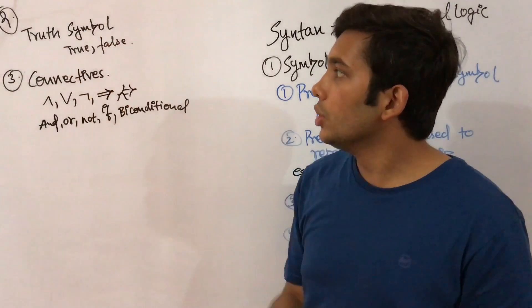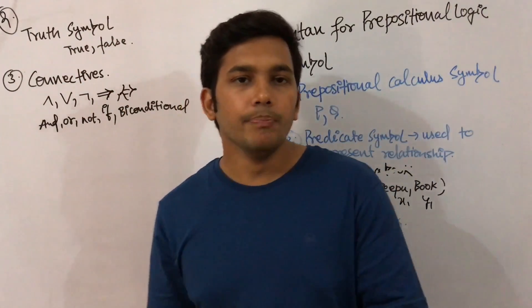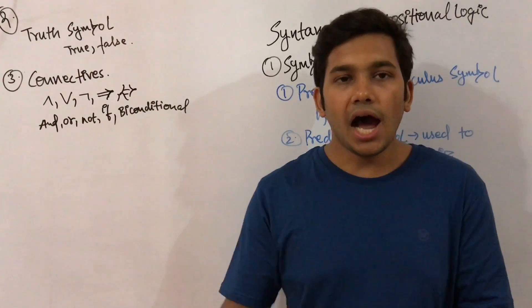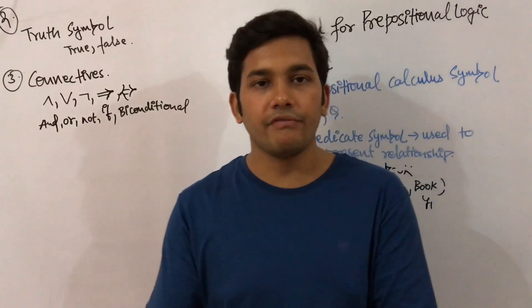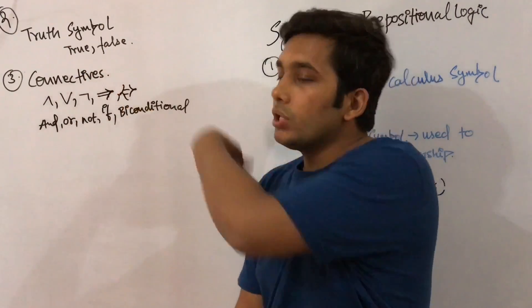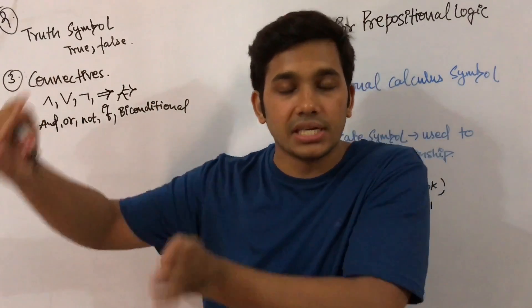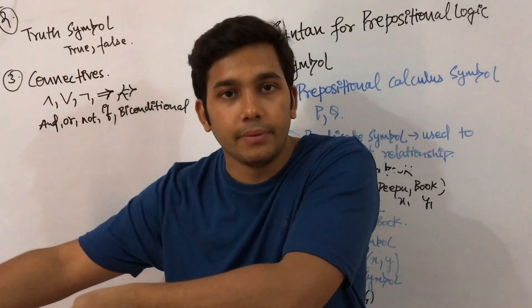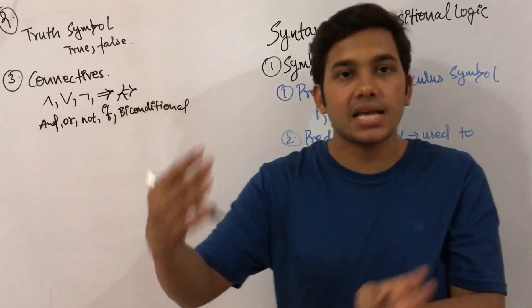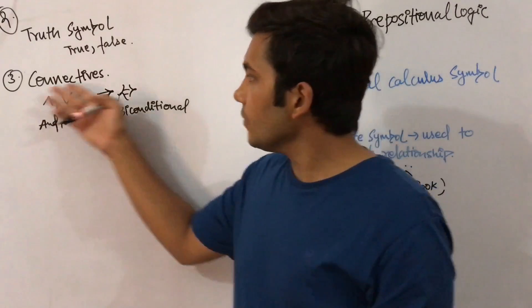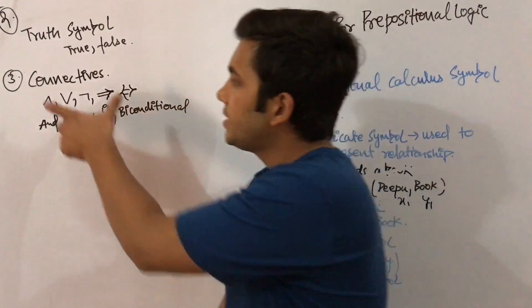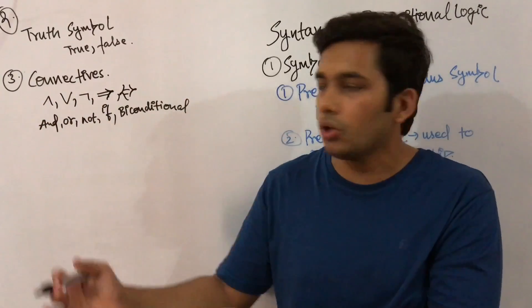The second type of syntax for propositional logic is truth symbols — true or false. These can be relative to the model being considered. For instance, if we consider a negative model, then 'sky is blue' would be a false statement. But if we consider a truth model, then 'sky is blue' would be true.